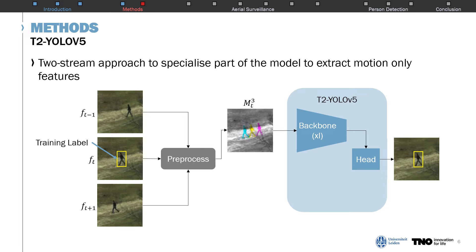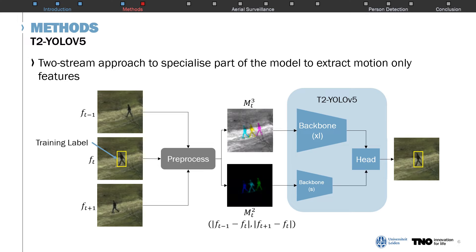The second architecture, T-YOLO-V5, consists of a two-stream approach. Besides our previously described network, a second smaller backbone network is added to specialize on extracting motion-only features. This subnetwork takes as input two image channels generated by taking the absolute frame difference between the target frame and the two support frames. This eliminates stationary backgrounds from the image, leaving only the temporal motion features. The features of both backbones are concatenated and combined by the head network, after which object detections are returned. By choosing a small secondary backbone, we limit the impact of this module on the model's inference speed.